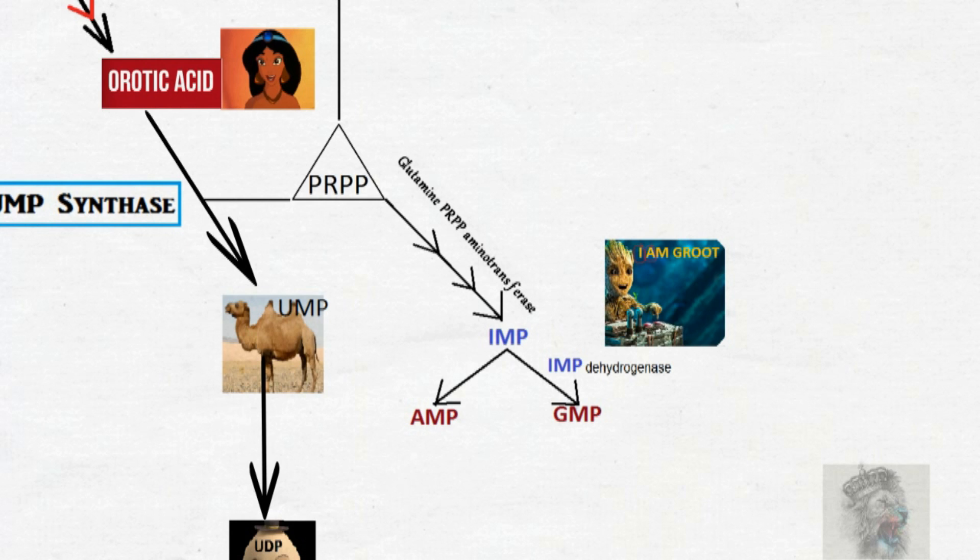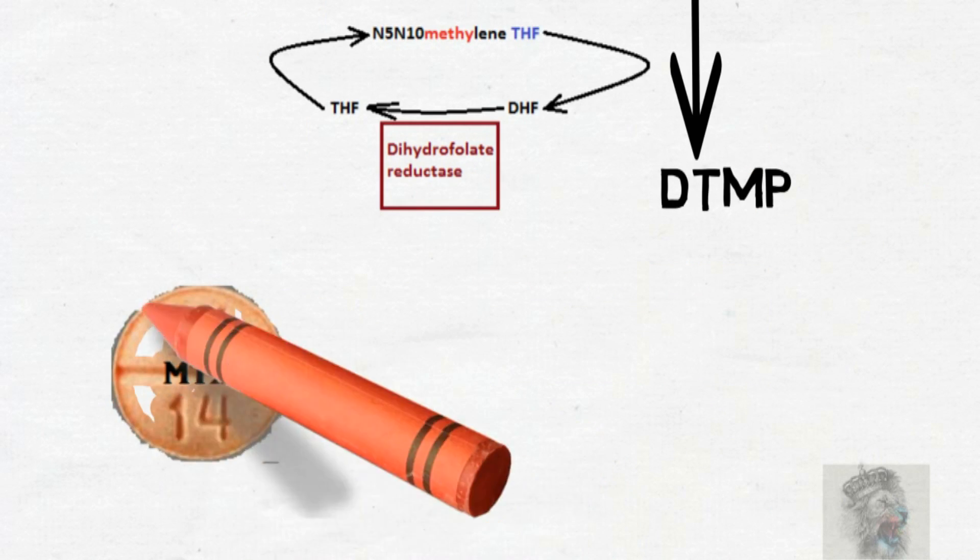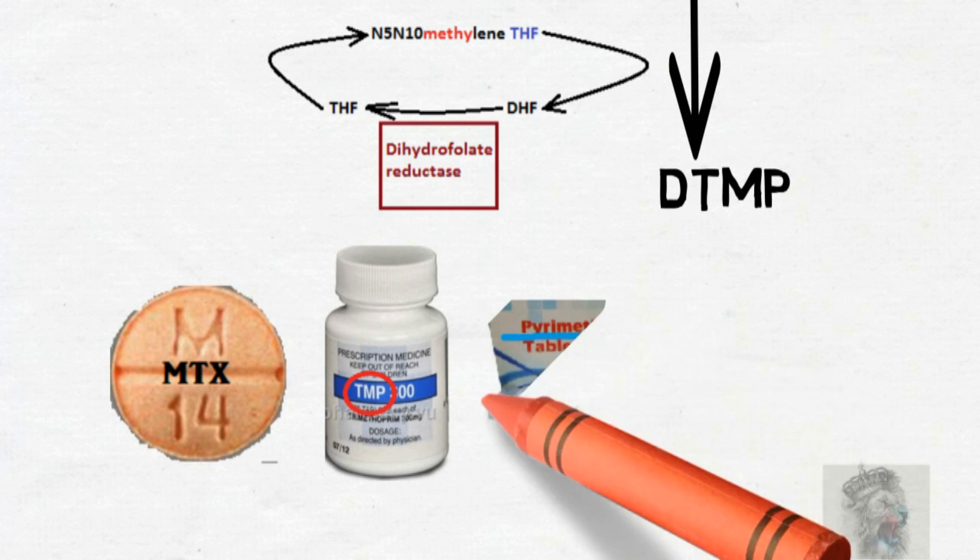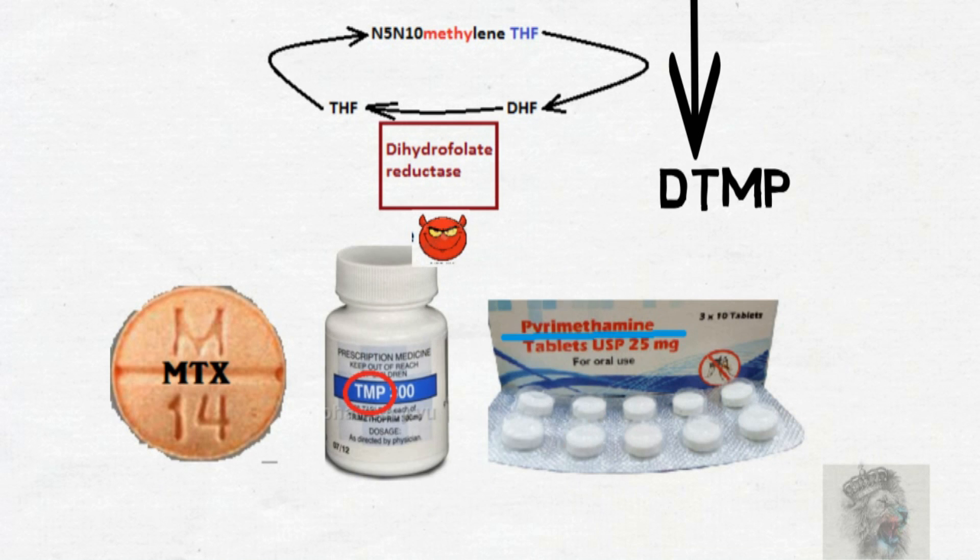So guys, let's get into pyrimidine synthesis inhibitors. They play an important role in pharmacotherapy. When we consider pyrimidine synthesis inhibitors, they are used in rheumatoid arthritis. For example, leflunomide inhibits dihydroorotate dehydrogenase. Methotrexate, trimethoprim, pyrimethamine inhibit dihydrofolate reductase. Hydroxyurea inhibits ribonucleotide reductase.